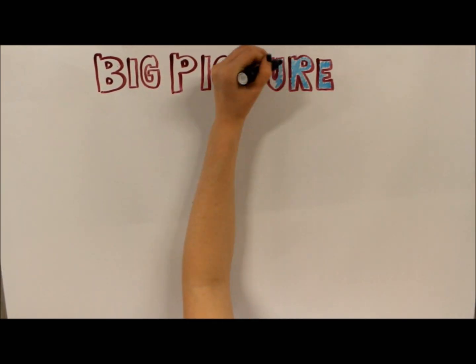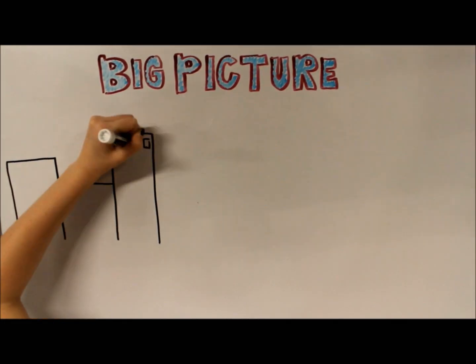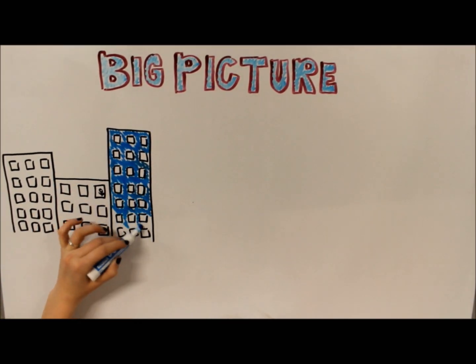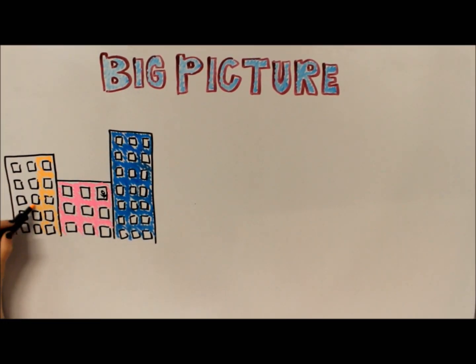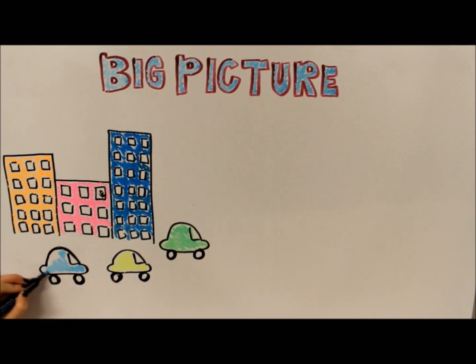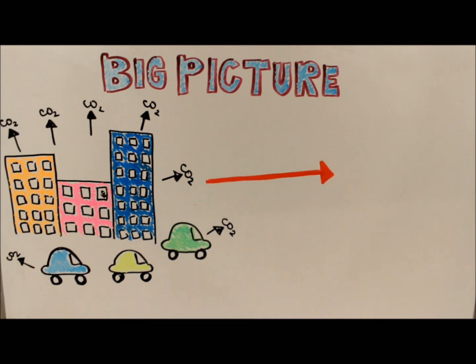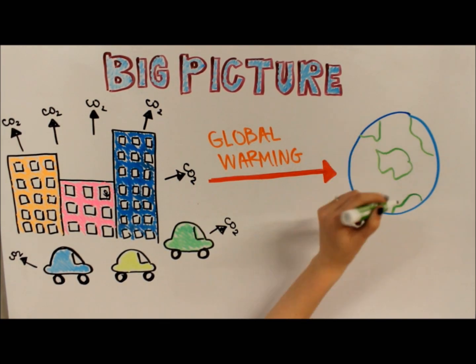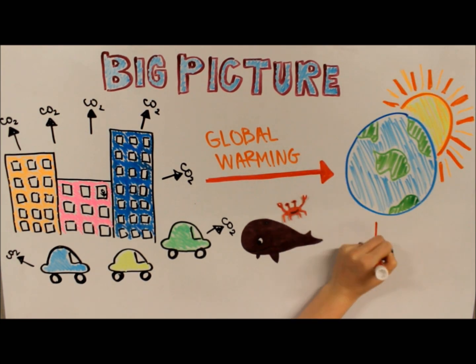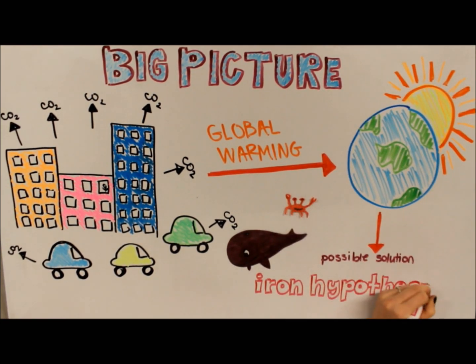So what can we do with this information? One major environmental problem today is the increase of carbon dioxide in the atmosphere caused by industrialization. This, in turn, leads to an increase in greenhouse effects, which is the main contributor to global warming. A possible solution to global warming could be carbon sequestration from algae blooms utilizing the iron hypothesis.